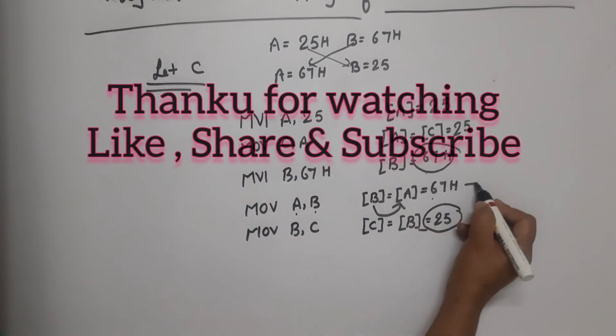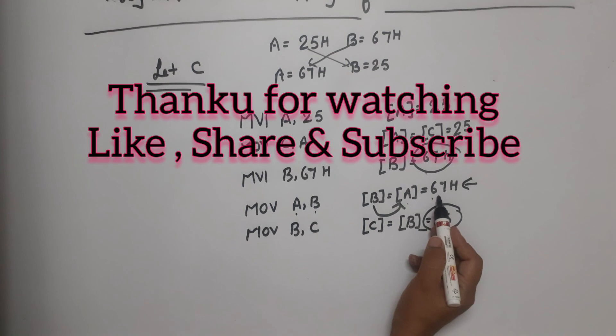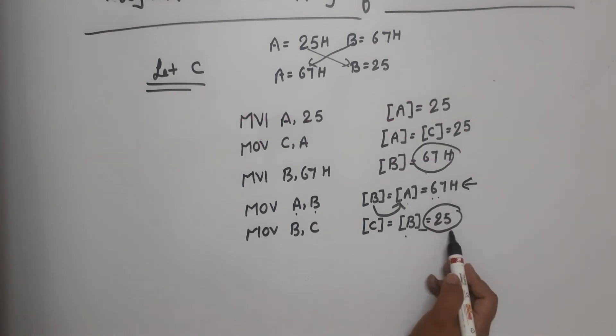Now you can see in the last two lines, what will be A's value? 67H. And what will be B's value? 25H. That means that there will be swapping here. So now stop the program. HLT. This is the swapping between registers. Thank you so much.